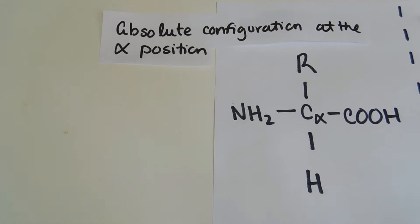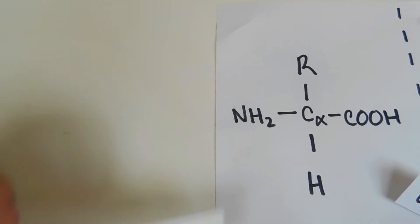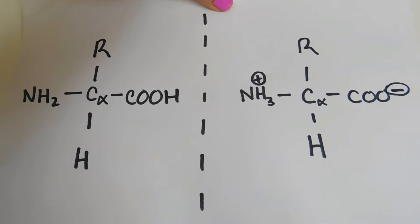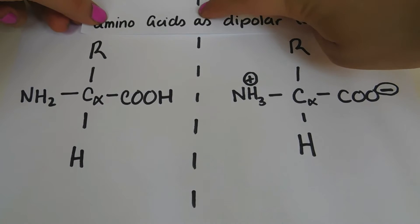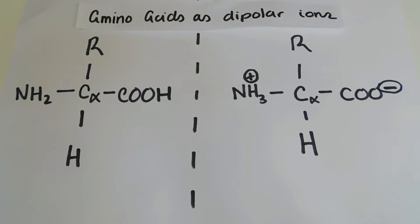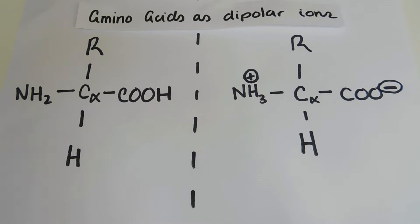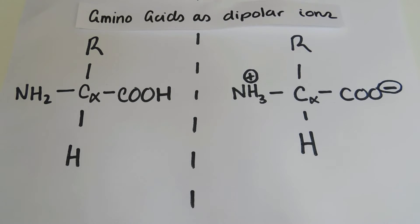Next we're going to look at amino acids as dipolar ions. Amino acids have charge groups of opposite polarity. Because they have this opposite polarity — kind of like poles — they have two ends with a different charge. We call them dipolar ions or zwitterions, which is a very cool sciency word. Dipolar ion basically just means you have a positive on one end and a negative on the other, creating these two different poles. The amino group and the carboxylic acid group are going to readily ionize, meaning they can gain or lose an electron, giving them a positive or negative charge.